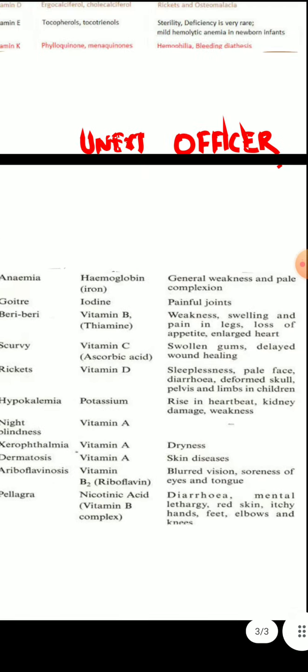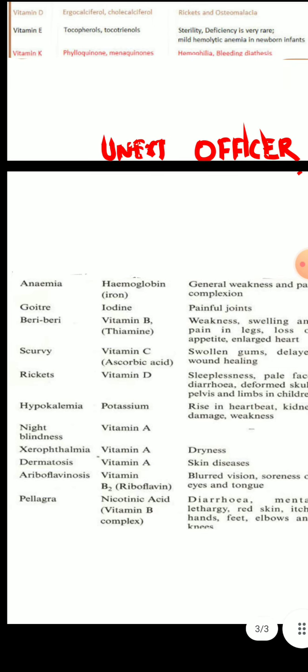Now about anemia: iron is needed for the production of hemoglobin, so in iron deficiency, hemoglobin level will be decreased. Hemoglobin delivers oxygen to body parts, and its deficiency causes anemia, characterized by fatigue due to decreased oxygen supply and visible paleness of the palm and lower eyelid, called pallor. In children, hookworm infestation is an important cause of anemia.